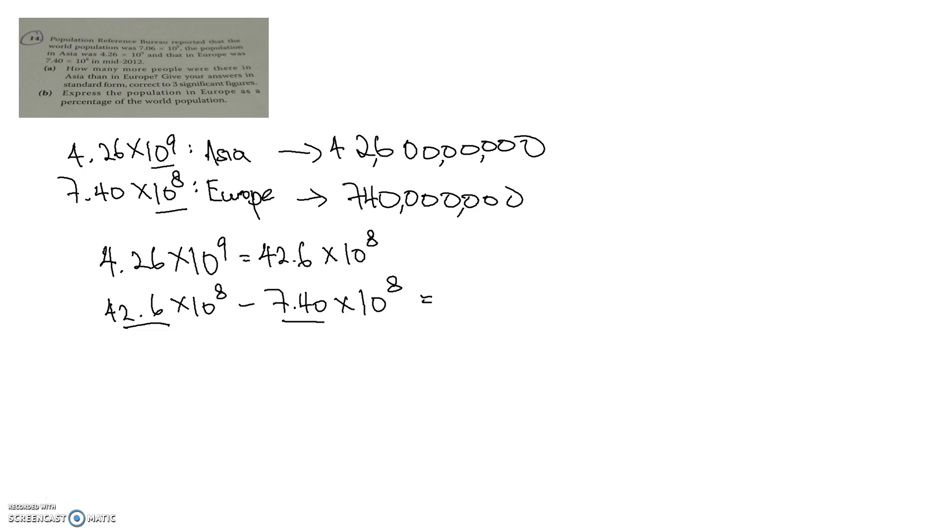What do you get with that? Which is basically 35.2 times 10 to the power of 8. Now this is your answer but this is not the final answer because this is not in the standard form. We know that in the standard form, your number must be between 1 and 9. So to do that, we just convert it this way: 3.52 times 10 to the power of 9.